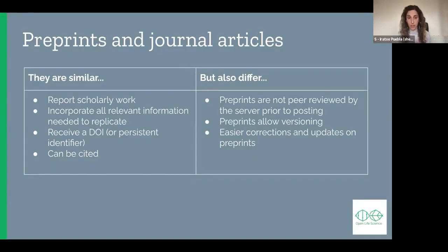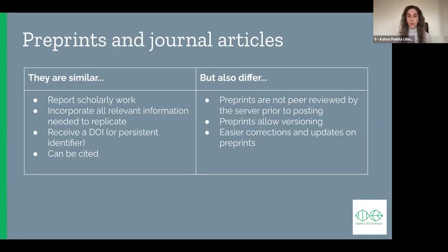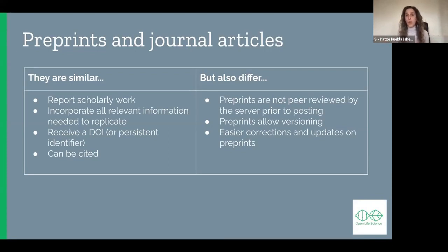There are some exceptions, like arXiv, which uses its own persistent identifier system, but in the majority of cases preprints receive a DOI. However, there are also differences between preprints and journal publications. The most important is that preprint servers will take the version of the paper you submit — they do some basic screening just to check that it's a research paper and there is nothing hugely problematic — and they will post the paper without peer review.